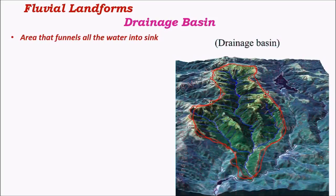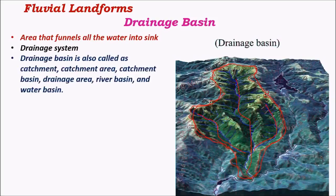A drainage basin is an area that funnels all water into a sink, and a drainage system consists of the tributaries and the trunk river. The sink may be an inland lake, a river, or a sea. Drainage basin is also called catchment area, drainage area, river basin, or water basin. The drainage basin of each single tributary is called a watershed; multiple watersheds of different tributaries together give rise to a complete drainage basin.